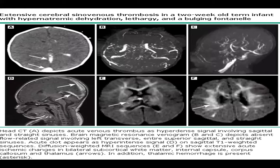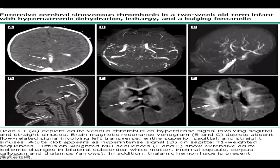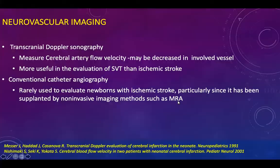This slide shows extensive cerebral sinovenous thrombosis in a two-week-old infant with hypernatremic dehydration, lethargy, and bulging fontanel. In acute venous thrombosis, there is a hyperdense signal involving the sagittal and straight sinuses. Brain resonance venogram shows absent signal. On sagittal T1-weighted sequence, the acute clot appears as a hyperintense signal. Diffusion-weighted MRI sequences show extensive acute ischemic changes in bilateral subcortical white matter, internal capsule, corpus callosum, and thalamus.